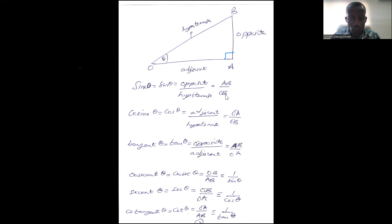Then cosine theta, written as cos theta, is the adjacent side over the hypotenuse. So that is OA over OB.